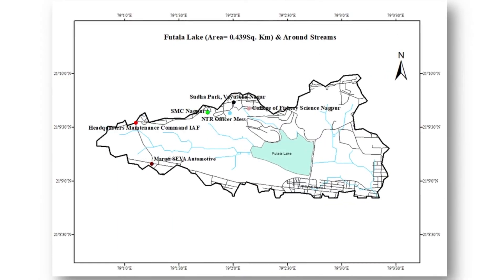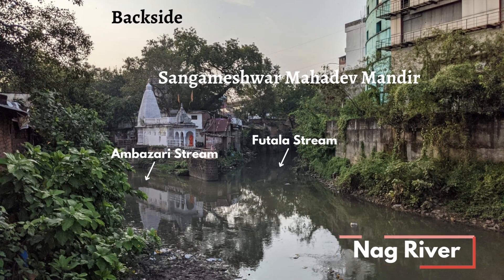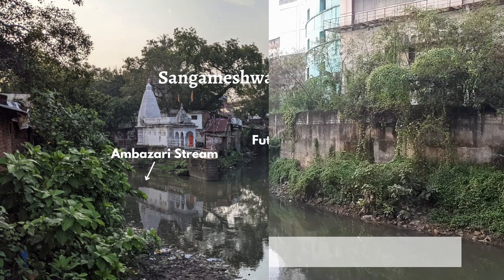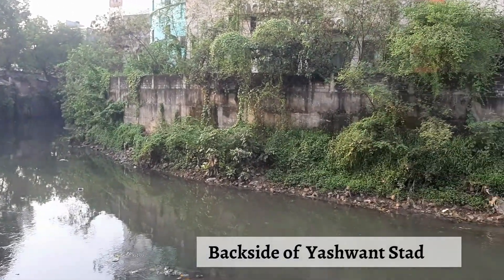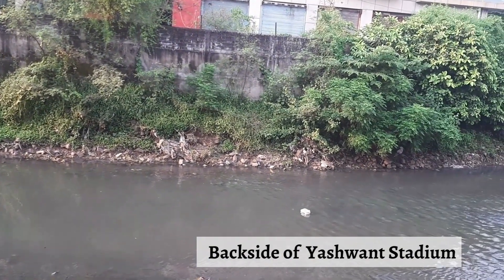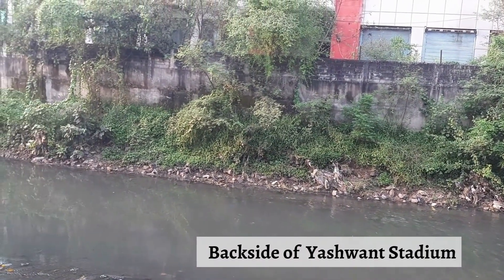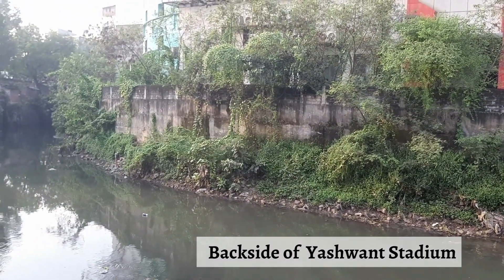Some other streams coming from Lava Hills join Futala Lake, as can be seen from the map. The area of Futala Lake is 0.439 square kilometers. The area behind Yashvant Stadium is known as the Sangam in Sitabudhi — the confluence of two streams, one coming from Ambazari Lake and the other from Futala Lake. The temple shown is Sangameshwar Mahadev Mandir, constructed in 1789 — a very famous temple in ancient times where people offered puja after bathing at Sangam Ghat. Currently, the condition is very bad as the rivers contain mainly sewage and the water has turned black.